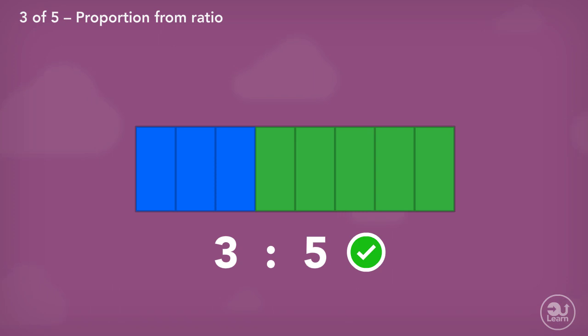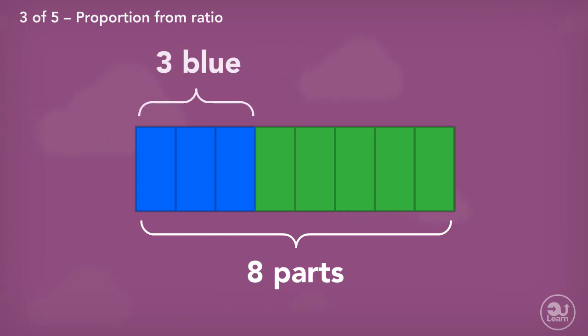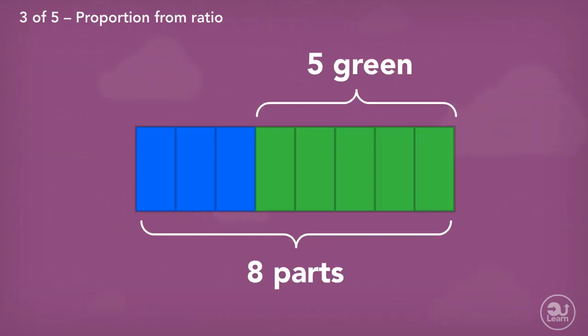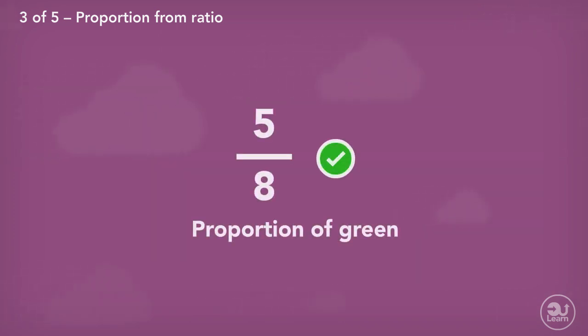How can we represent the proportion the blue parts represent compared to the whole image? Out of the eight equal parts, three are blue. Therefore, the proportion of blue is three over eight or three-eighths. The proportion of green is five over eight or five-eighths, due to five out of the eight equal parts being green.